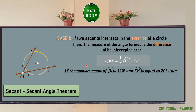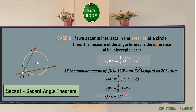For example, if the measurement of arc JL is 140 degrees and arc FH is 20 degrees, we can solve angle JKL by substitution: angle JKL = one-half of (140° − 20°) = one-half of 120° = 60 degrees. Therefore, angle JKL is equal to 60 degrees.